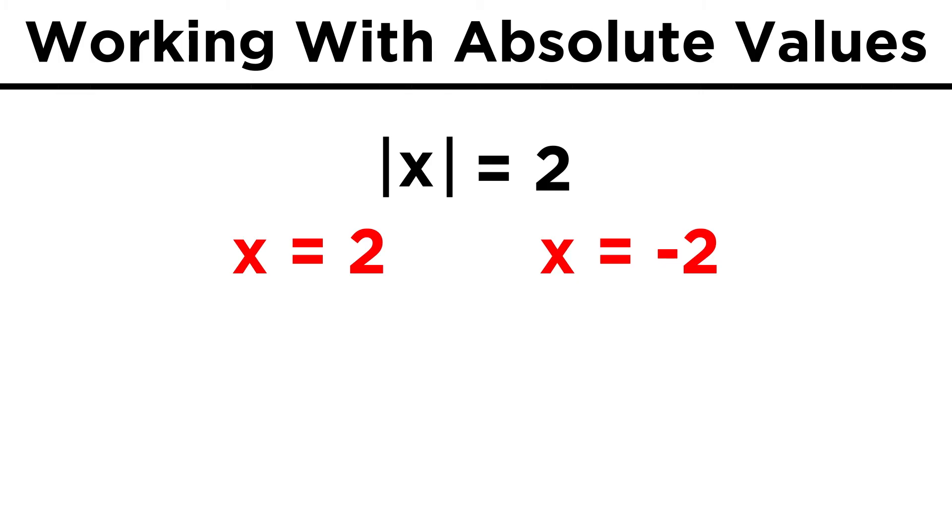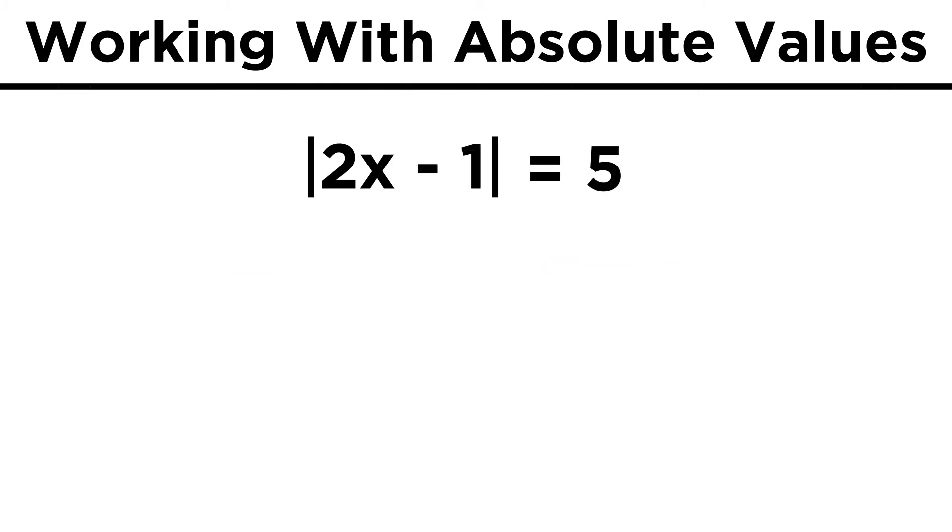If we try a trickier one, like the absolute value of 2x minus 1 equals 5, then again we split this up into two equations.